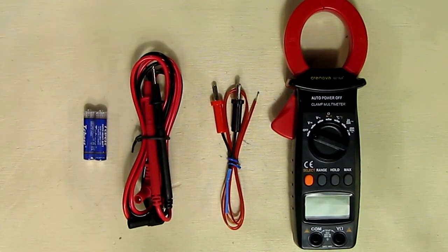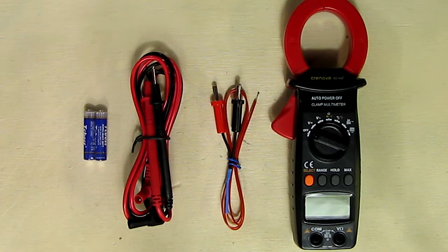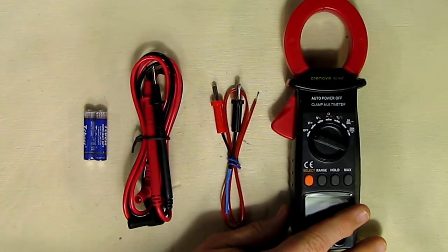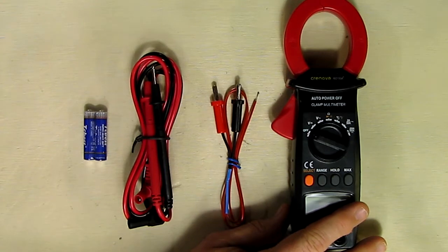Hello again, this is Robert Veach. This is my video review of a clamp multimeter, the brand is Canova, it's the 6016A, sold by a company on Amazon called LFUS.